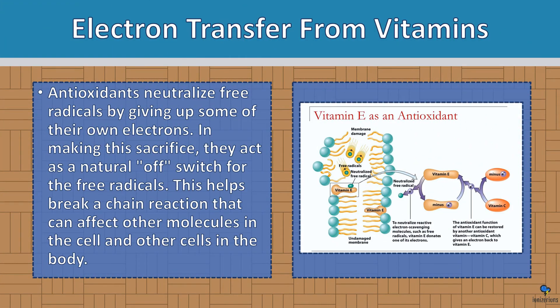Electron transfer from vitamins: antioxidants neutralize free radicals by giving up some of their own electrons. In making this sacrifice, they act as a natural off switch for free radicals. This helps break a chain reaction that can infect other molecules in the cell and other cells in the body. Vitamin C can donate an electron to vitamin E, and vitamin E can donate an electron to a molecule that needs it — preventing membrane damage.